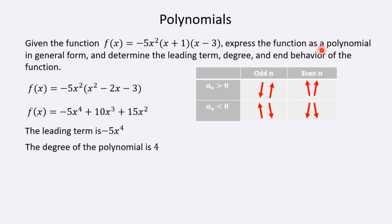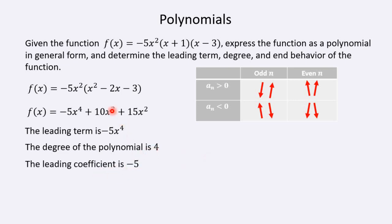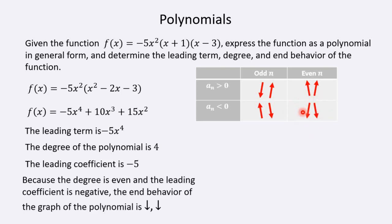Now I'll take a look at the end behaviors. Because the degree is even, I'm in the even-degree column. The leading coefficient is negative 5, which is negative, so I'm in the bottom row. With a negative leading coefficient and an even degree, the end behavior shows both ends going down — y approaches negative infinity in both directions.